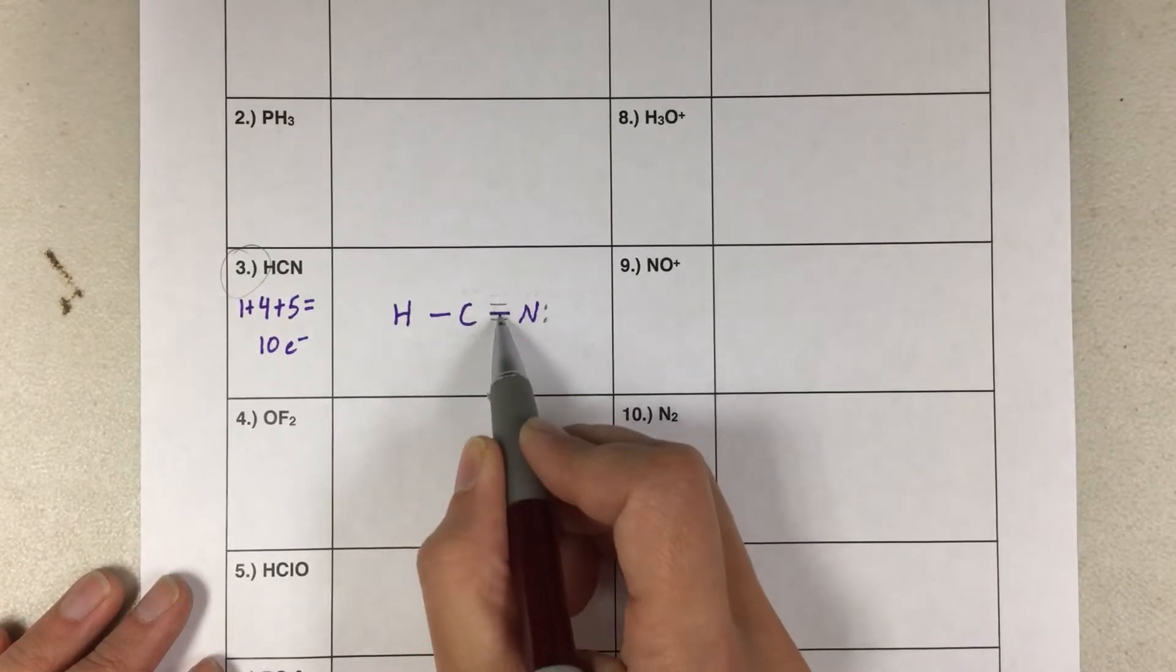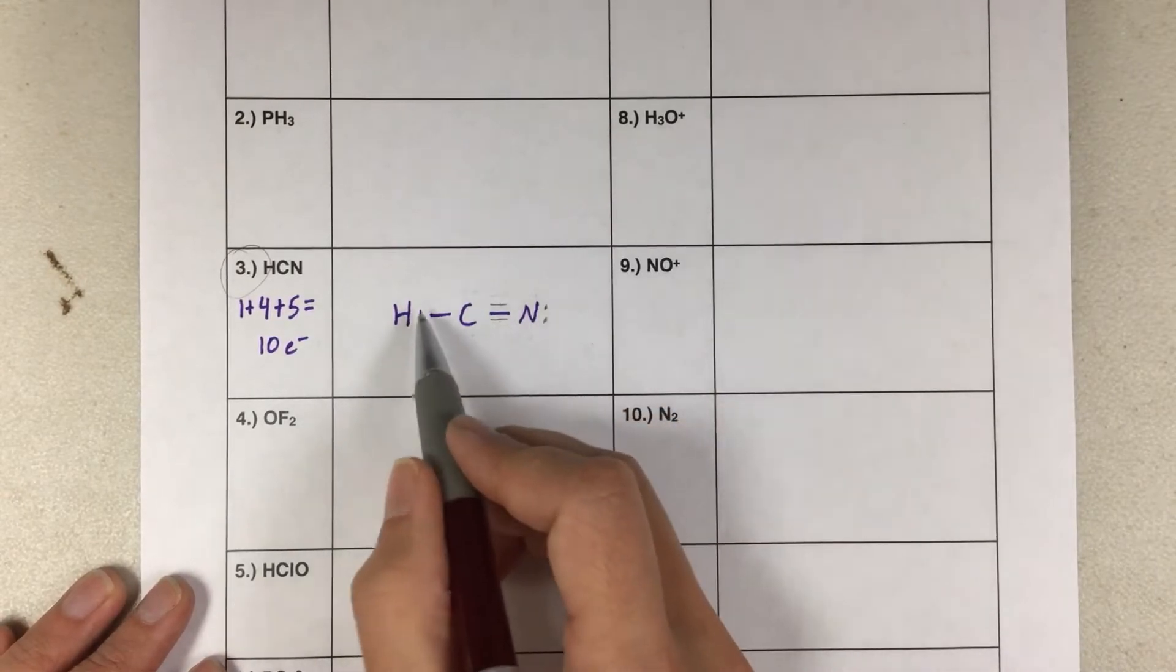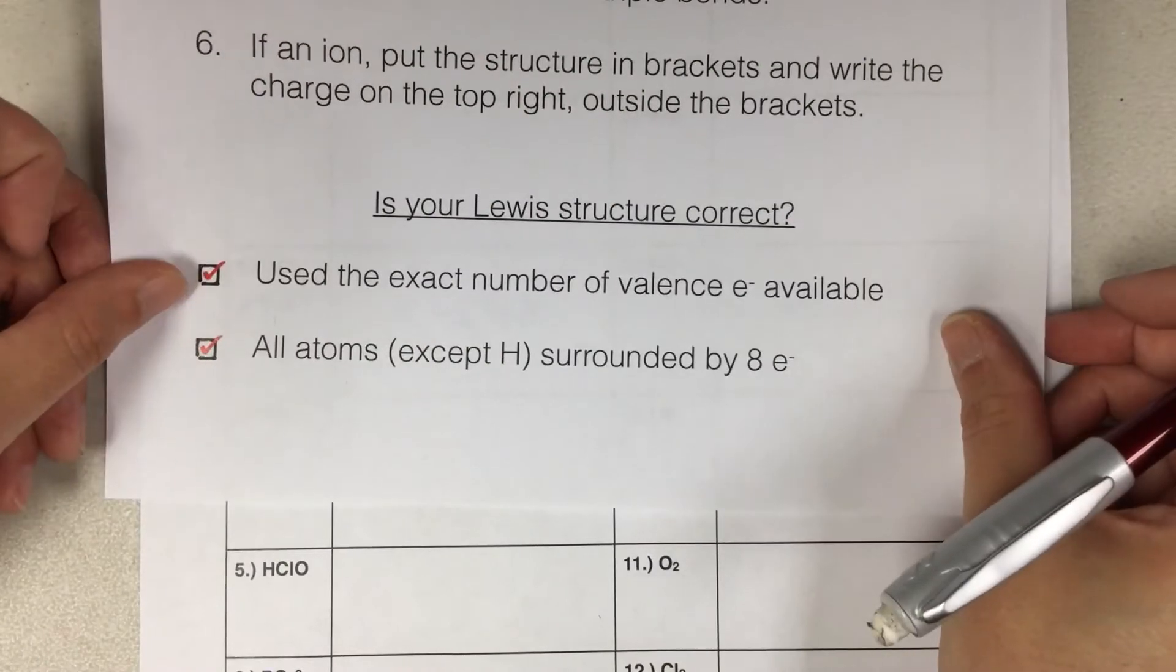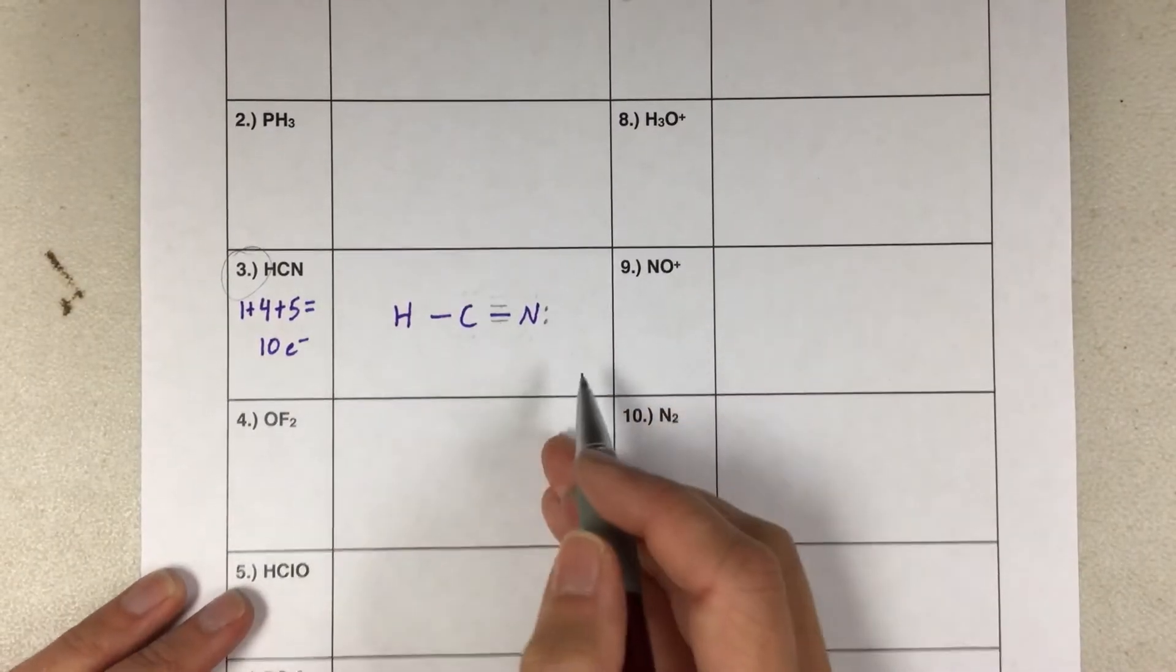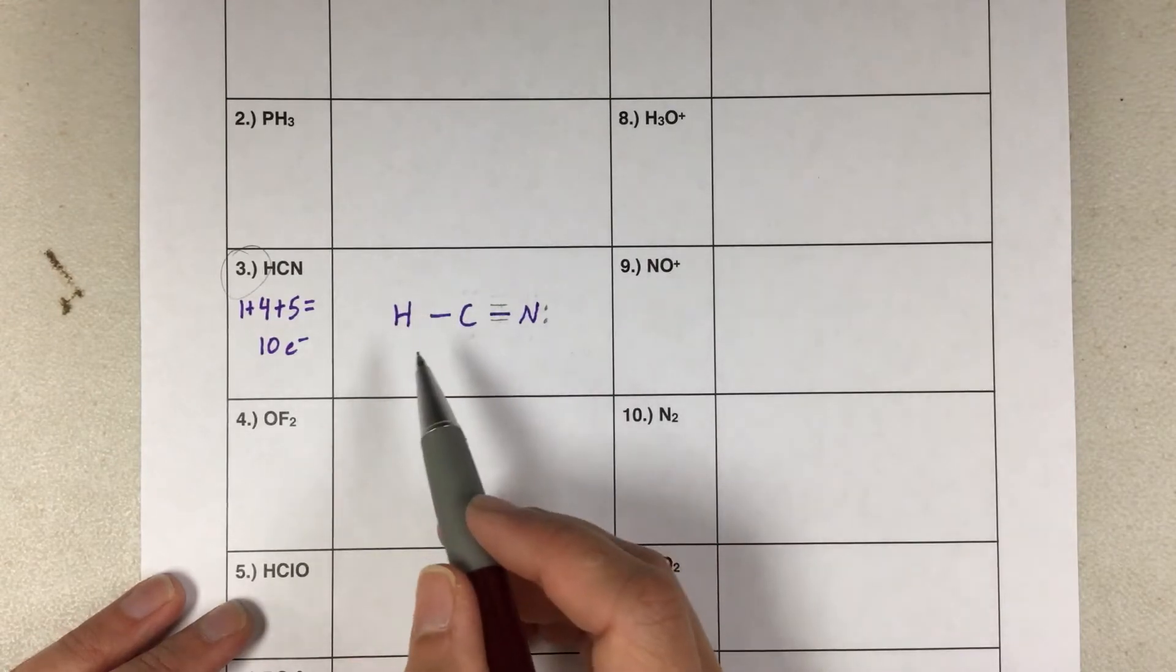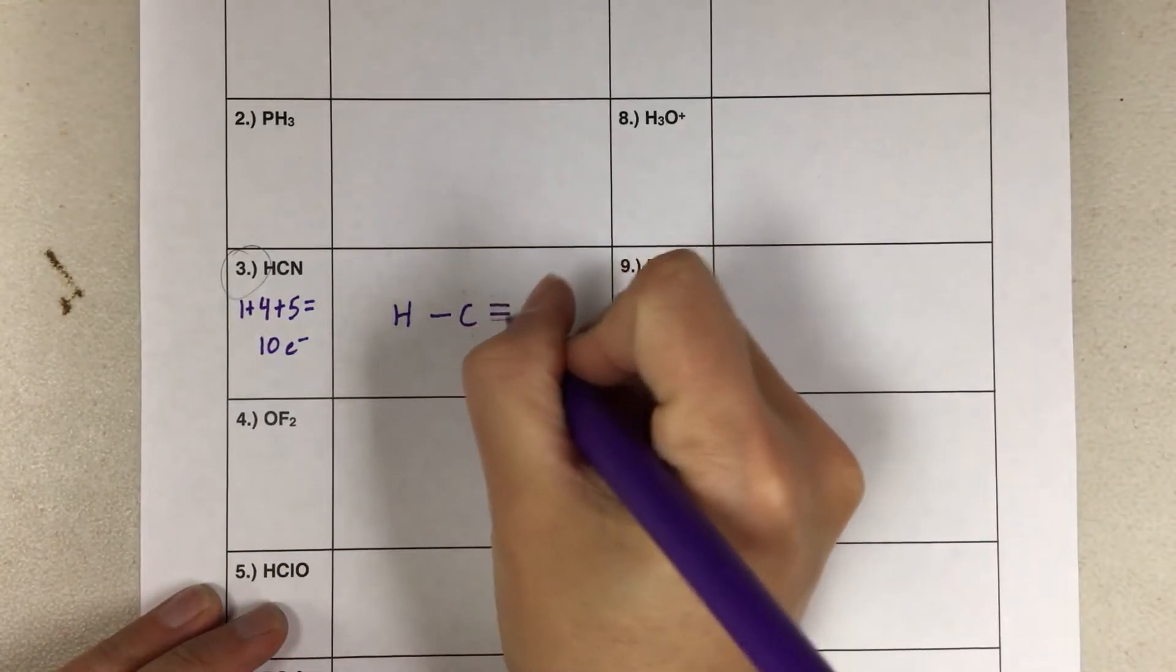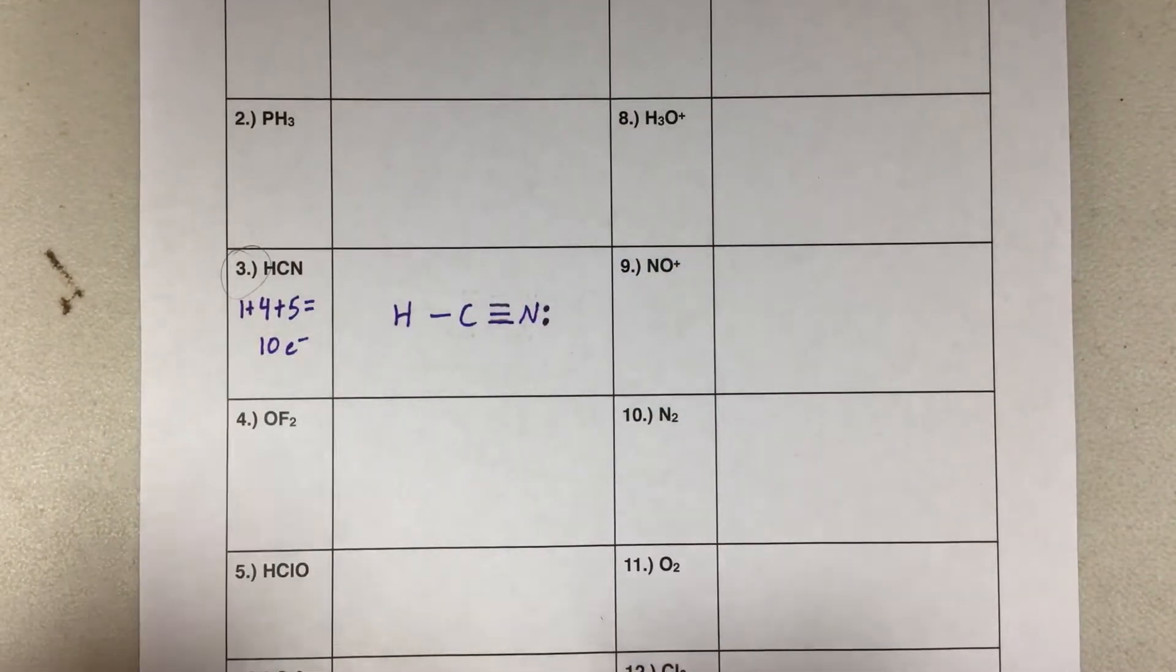Carbon has two, four, six, eight around it. Nitrogen has two, four, six, eight around it. Hydrogen has just the one bond. So this looks good. We check off both things here to know that our Lewis structure is correct. And this also follows the HONK rule. Nitrogen has three bonds, so it's happy. Carbon has four bonds, so it's happy. Hydrogen has one bond, so it's happy. And that is the correct Lewis structure for HCN.